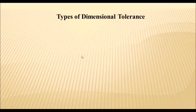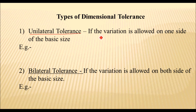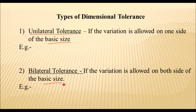Now, types of dimensional tolerance: dimensional tolerance is of two types. First is unilateral tolerance — if the variation is allowed on one side of the basic size, meaning either the positive side or the negative side only, then it is called unilateral tolerance. Second is bilateral tolerance — if the variation is allowed on both sides of the basic size, meaning both positive and negative sides, then it is called bilateral tolerance.